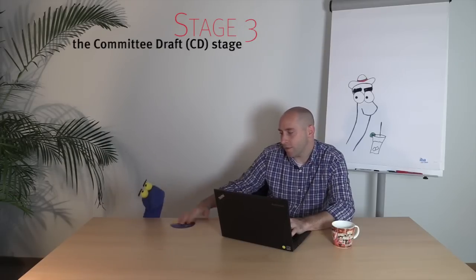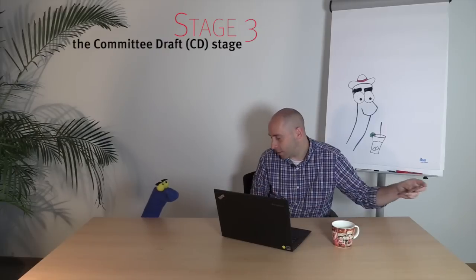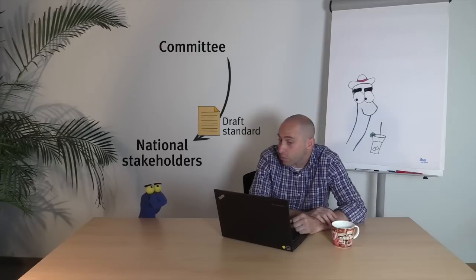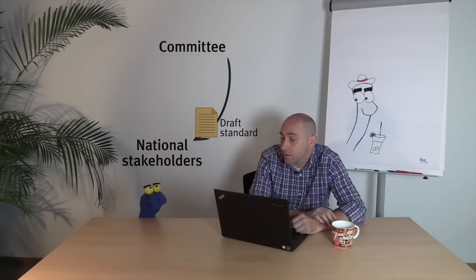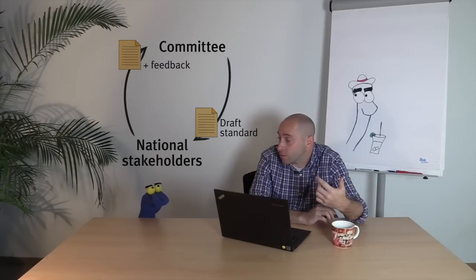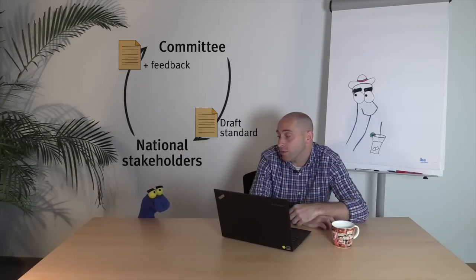Andy, I brought a CD. I want to dance. Not this kind of CD. We're talking about the CD stage of a standard. This is the committee draft. So in this stage the committee or subcommittee shares the draft standard they receive from the working group with other experts in their countries for comment. So once the member bodies receive feedback from these national experts or stakeholders as we call them, they will then vote to approve or disapprove the draft.